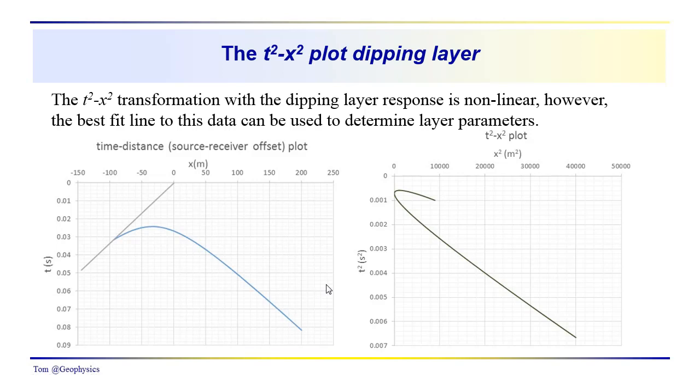When we take a look at the T2 X2 data for the dipping layer reflection, it is very nonlinear as you can see. Our hyperbola here is offset in the up dip direction. When we plot it in a T2 X2 coordinate frame, we have this pronounced hook in the data.